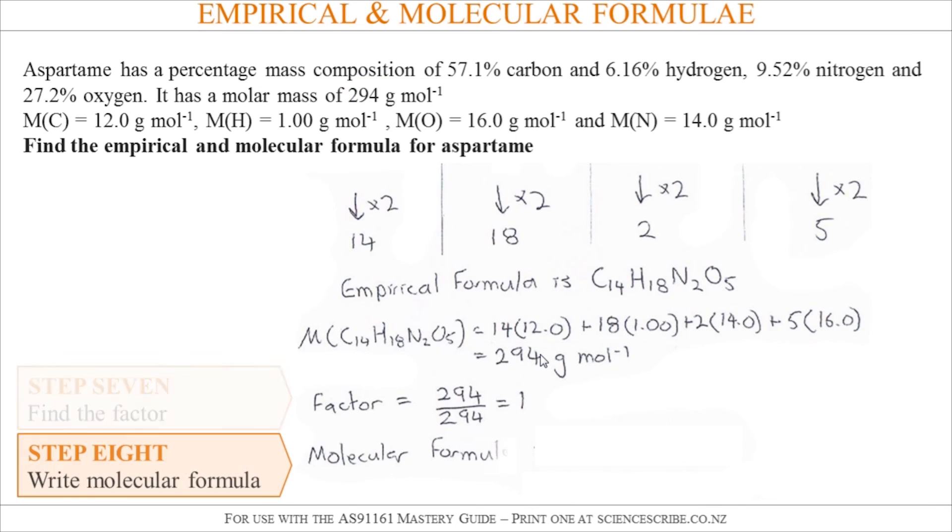Now what that means is that when I get to step 8 to calculate my molecular formula, I take the factor of 1 and multiply it by the empirical formula, which means the molecular formula doesn't change. It's not different to the empirical formula. If the factor was say 2, then I'd have to double the 14 to 28, 18 to 36, the 2 to 4, and the 5 to 10 for carbon, hydrogen, nitrogen, and oxygen.